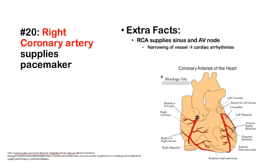Number 20: The right coronary artery supplies the pacemaker of the heart — the SA node — as well as the AV node. The right coronary artery has a branch to the SA node, and narrowing of that vessel can lead to cardiac arrhythmias because it supplies both the SA and AV nodes.